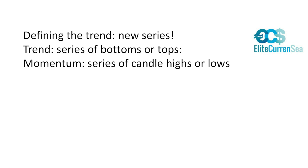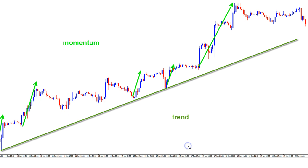This topic deserves its own series, which we will create once the Fibonacci series is completed — we will dive into trends and everything connected to it. In general, be aware that trends are a series of tops and bottoms, and momentum is a series of candle highs or lows. On the chart, the green line indicates higher highs and higher lows — a trend channel to the upside — while the lighter green arrows indicate momentum within the trend, with candles pushing higher and higher. For a downtrend those would be lower highs. Both are equally valid when using Fibonacci for identifying potential retracements and targets.